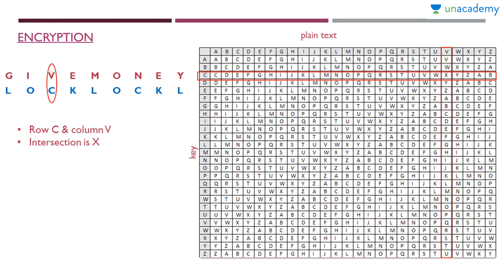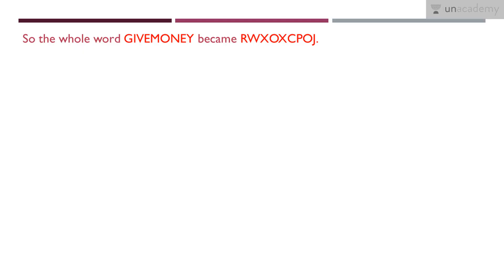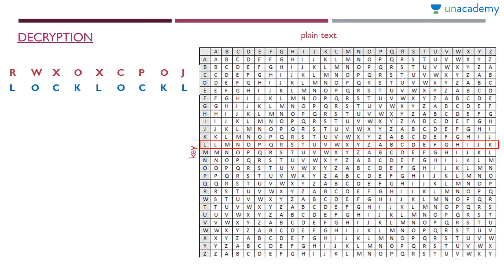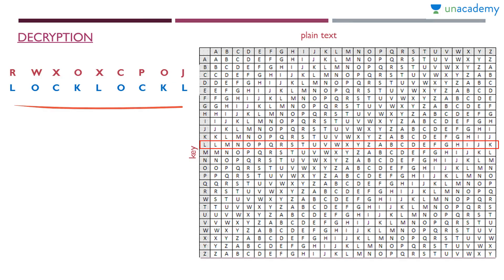So 'give money' is completely encrypted to R, W, X, O, X, C, P, O, J. That is the Vigenère cipher for encryption. Now let's see how to decrypt this. The cipher text is R, W, X, O, X, C, P, O, J and we also have the key.